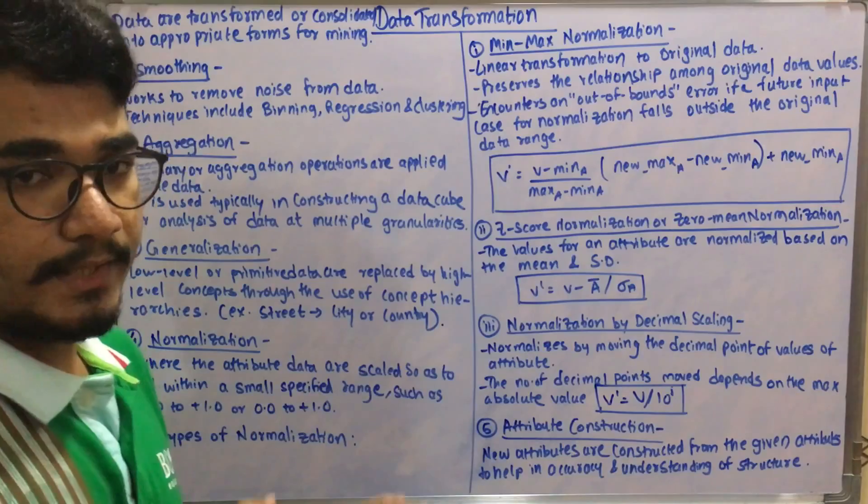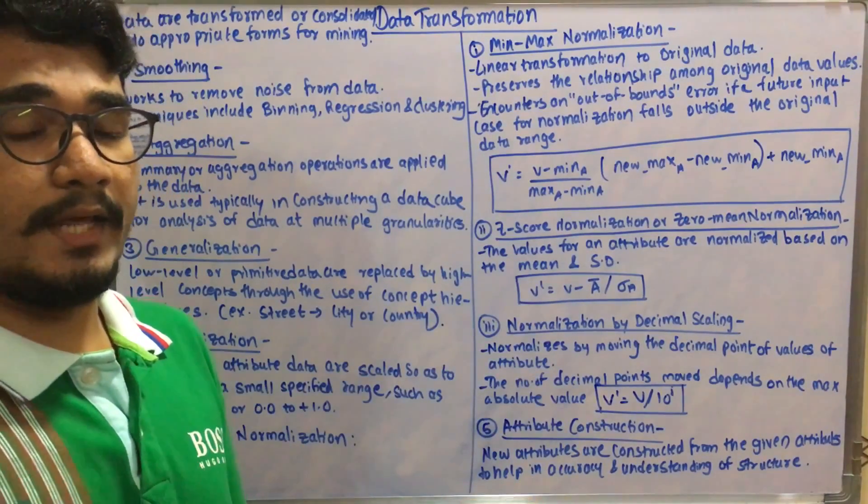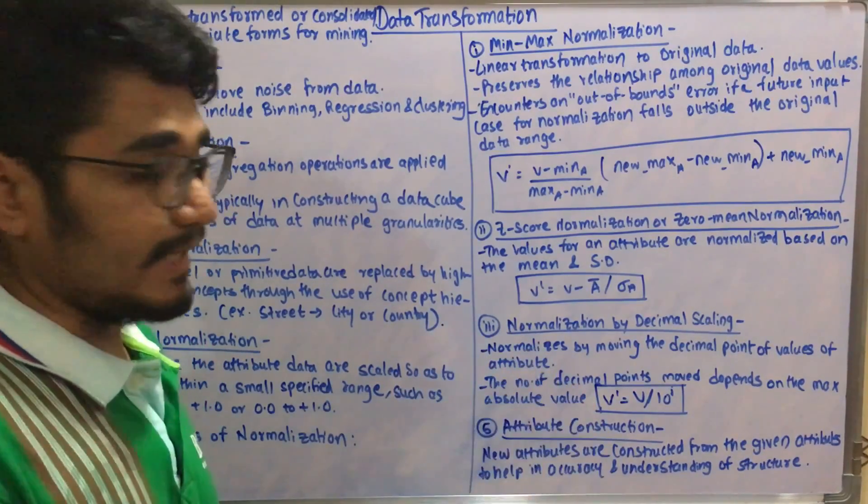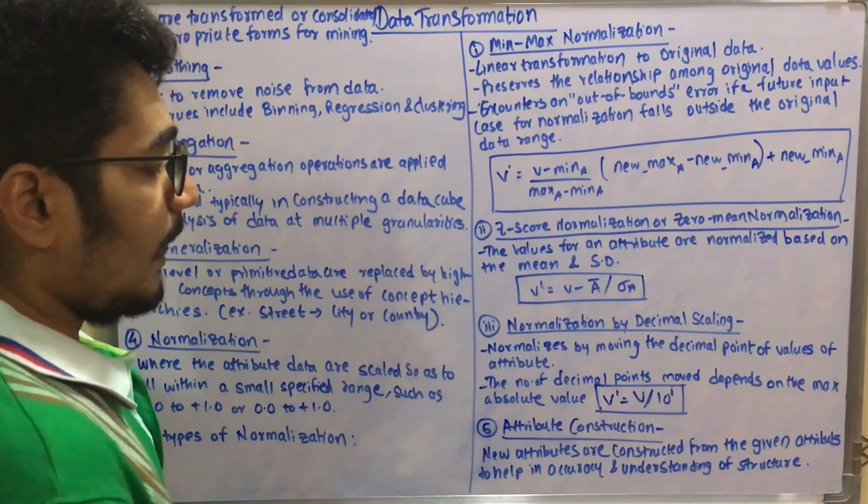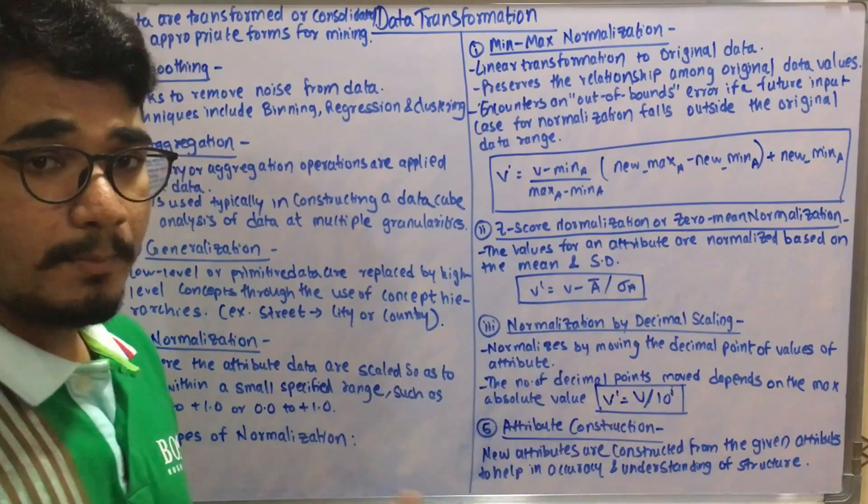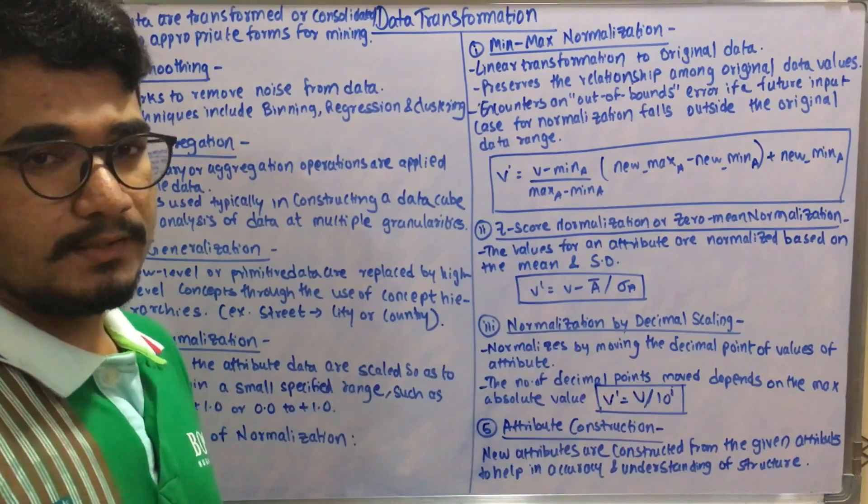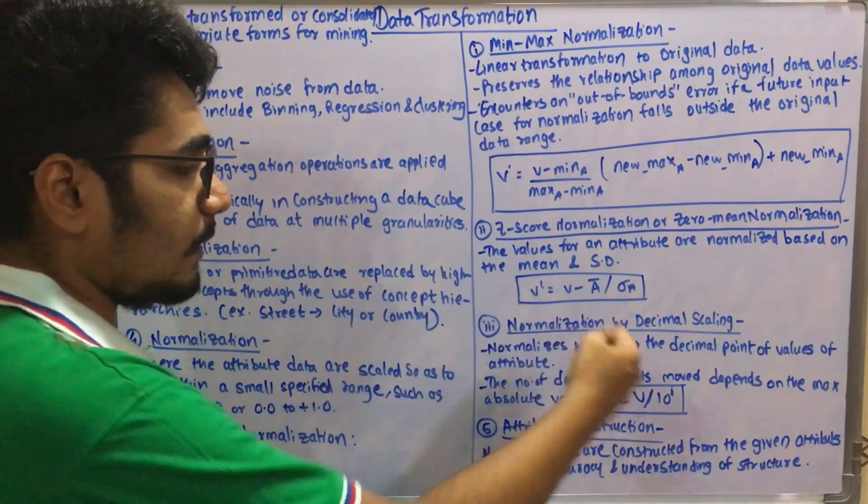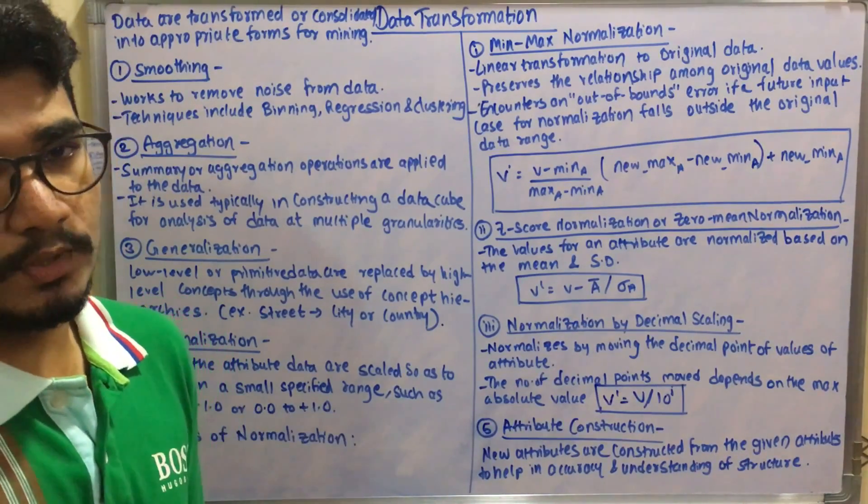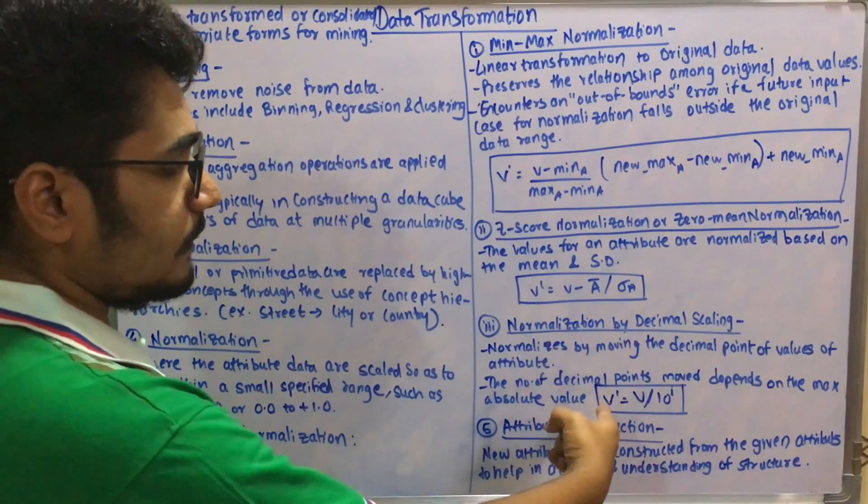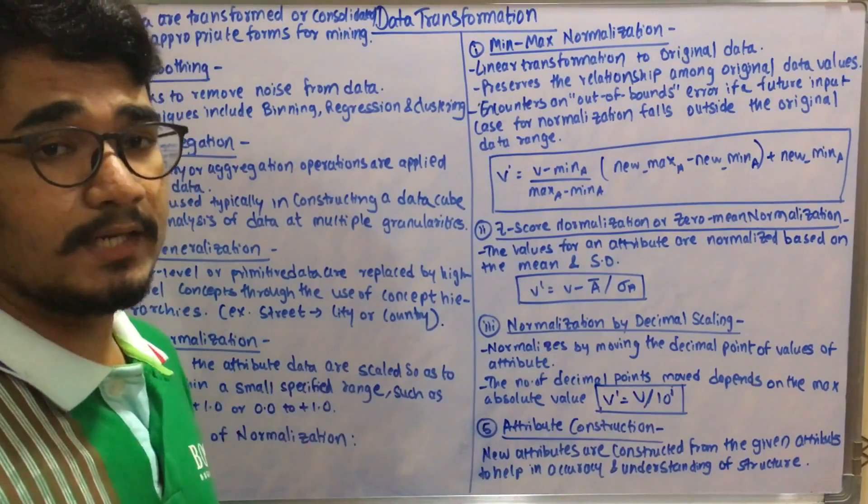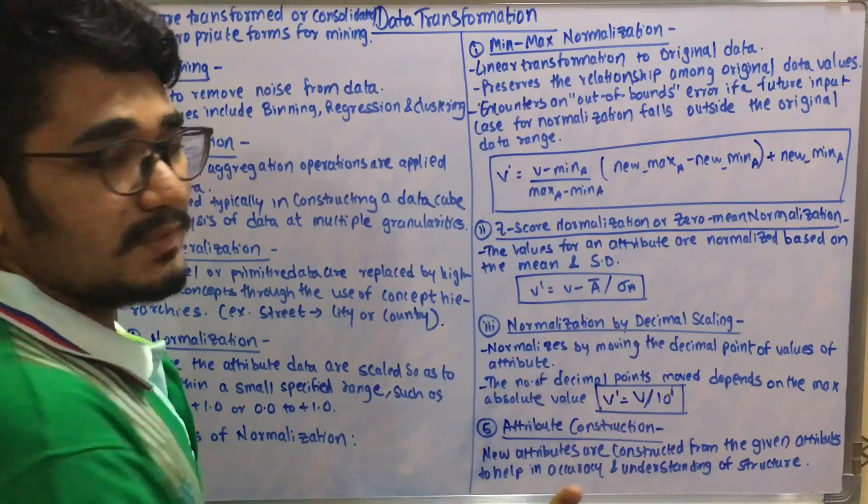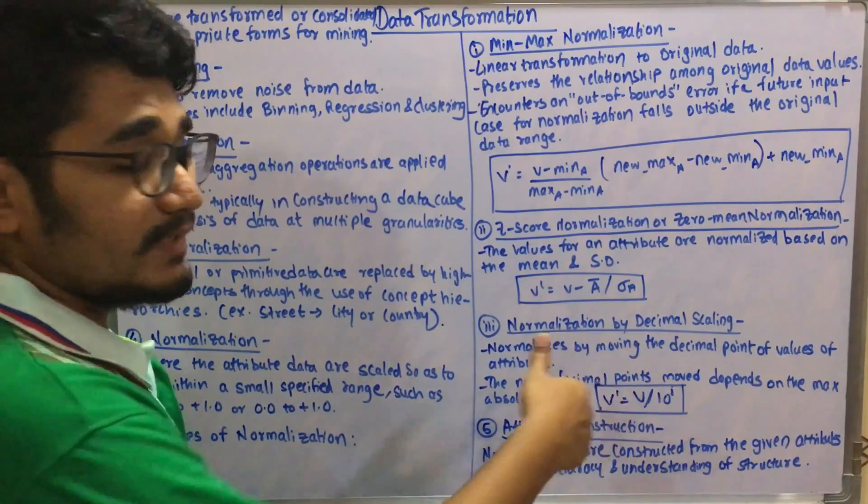We come to the final technique of normalization, that is normalization by decimal scaling. You divide or multiply with the help of a decimal value to some particular range, and it normalizes by moving the decimal points of values of an attribute. The number of decimal points to be moved depends upon the maximum absolute value of A. It's given by the equation: V dash equals V divided by 10 raised to J, where J represents the smallest integer such that the maximum of mod of V dash is less than one.